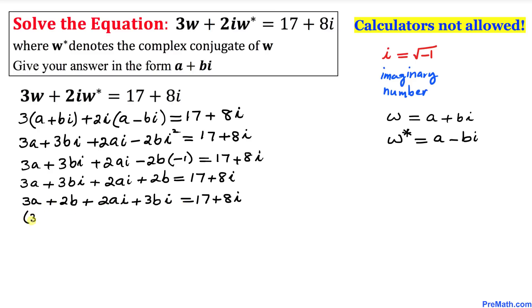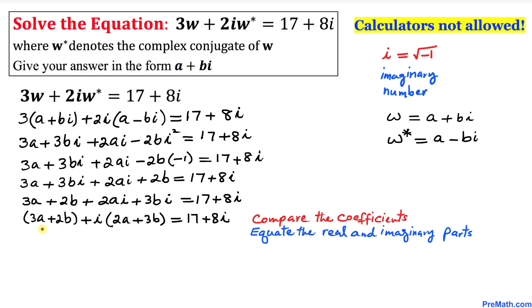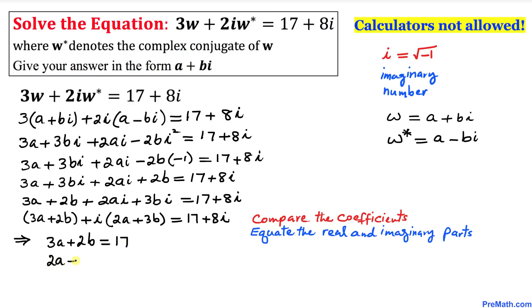Here I have rearranged these terms. Let's put 3a plus 2b in parentheses, and factor out i from the imaginary terms, giving (3a plus 2b) plus i times (2a plus 3b) equal to 17 plus 8i. Now let's compare coefficients: we equate the real part with the real part on the right-hand side, and the imaginary part with the imaginary part. So 3a plus 2b equals 17, and 2a plus 3b equals 8.